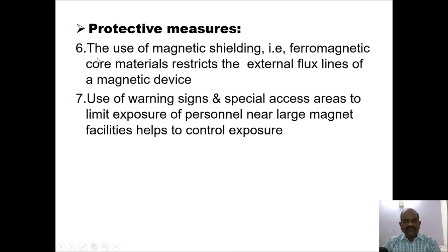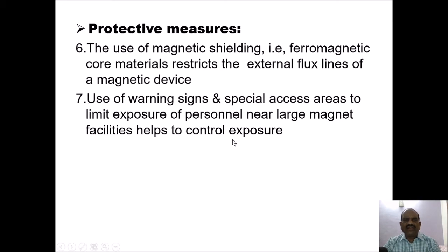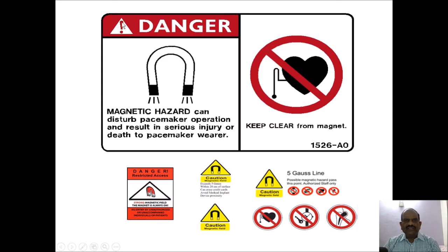The use of magnetic shielding—ferromagnetic core materials—restricts the external flux lines of a magnetic device. The use of warning signs and special access areas limits exposure of personnel near large magnet facilities. Warning signs regarding radiation zones and radiation hazards should be posted. Signs indicating that magnetic hazards can disturb pacemaker operation and result in serious injury or death to pacemaker wearers should be displayed, with instructions to keep clear from the magnet.